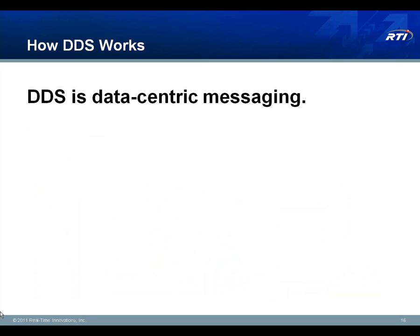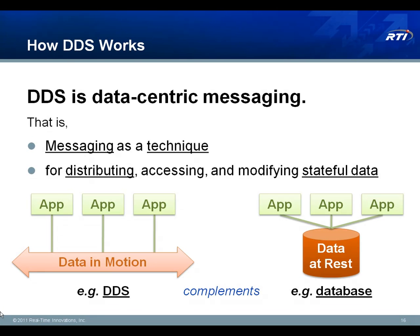We return full circle to the phrase: DDS is data-centric messaging. A lot of people use DDS the same way they would use any other messaging technology — it provides high performance and efficient peer-to-peer communication, and that works really great. But they're still building their systems the same way they were before. They're getting incremental value, but they're only getting a small amount of the value that the technology can offer. DDS is really about distributing stateful data, accessing it and querying it in motion in an analogous way to how you would access it and query it at rest from a database or another data-centric technology.